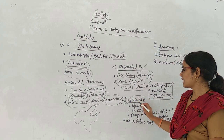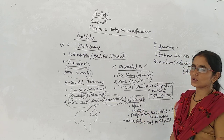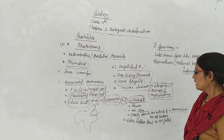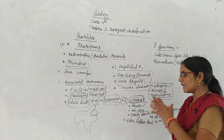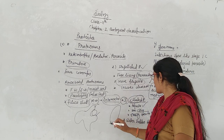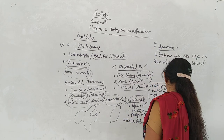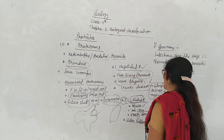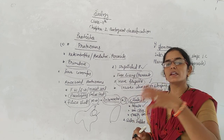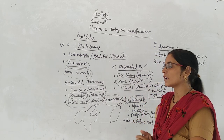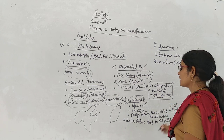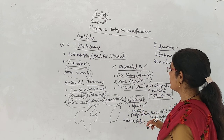The third group is ciliated protozoa. There are thousands of ciliates. They are aquatic. For example, Paramecium is a ciliated protozoa. It is aquatic and lives in a gullet cavity.